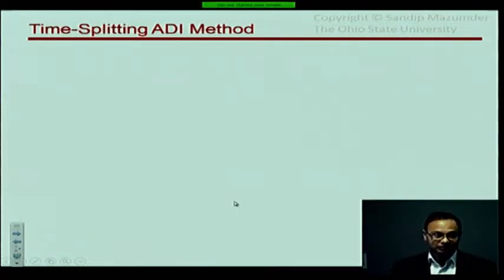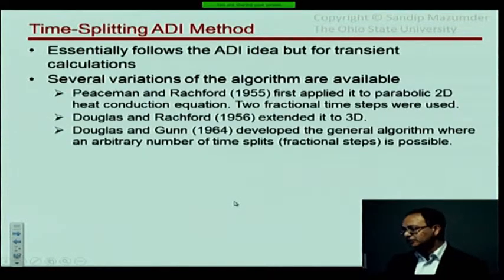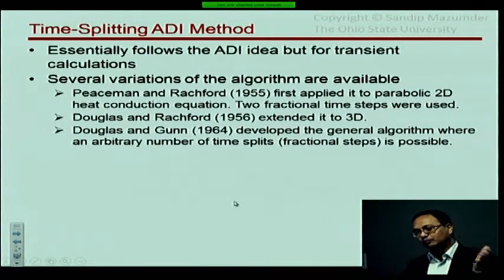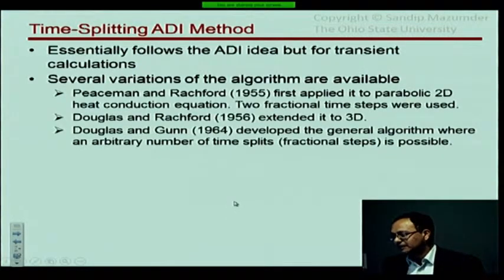This is not the same ADI that you learned for elliptic problems. This is called the time-splitting ADI method. People who do CFD calculations are more familiar with this method than the other ADI method we've already learned in class. Essentially, it follows the idea of ADI—doing row-wise sweeps and column-wise sweeps—but this is for transient calculations.